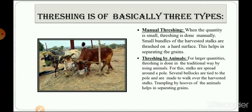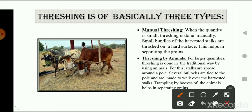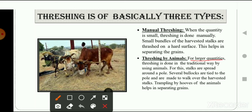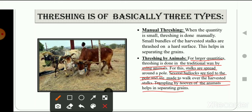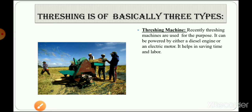The second way is threshing by animals. For larger quantities, threshing is done in the traditional way using threshing animals. The stalks are spread on a field, several bullocks are tied to a pole and made to walk over the harvested stocks. The trampling by the hoofs of the animals helps in separating the grains, which fall to the ground and can then be easily collected.